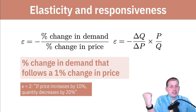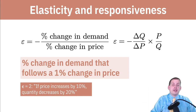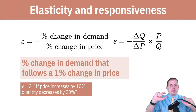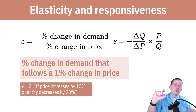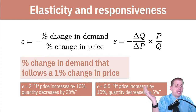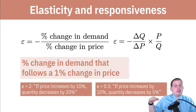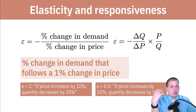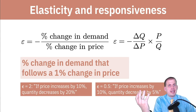For instance, if you have an elasticity value of two, that means if the price increases by 10%, then the quantity will decrease by 20% — more people will move away from it. If the elasticity value is 0.5, that means if the price goes up by 10%, the quantity will go down only by 5%, just a little bit. People will start moving away from the product, but they'll mostly stick with it.